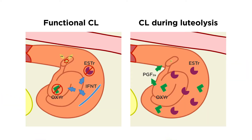Vascularization of a functional CL and a CL going into luteolysis is consequently dramatically different. The Doppler ultrasound uses this difference to identify non-pregnant cows when luteolysis happens, which is around 21 days after insemination.